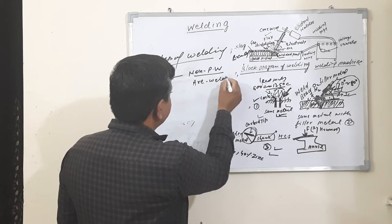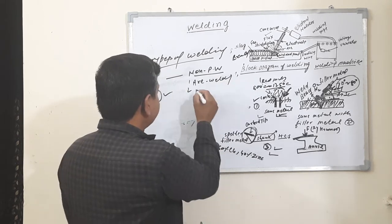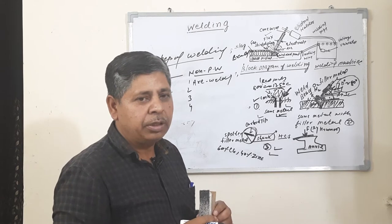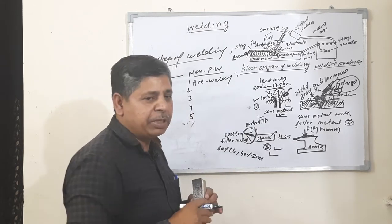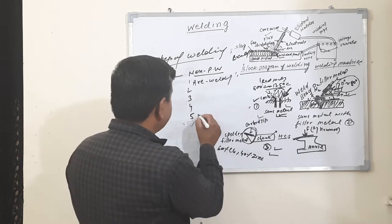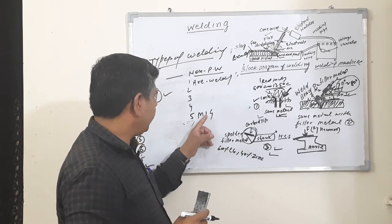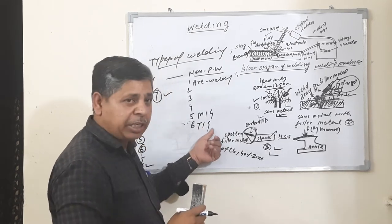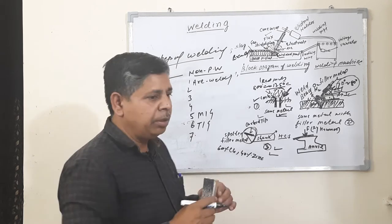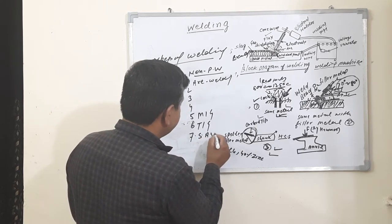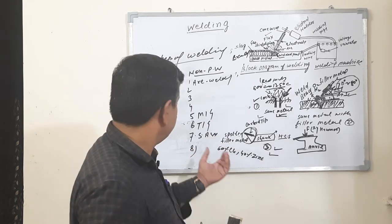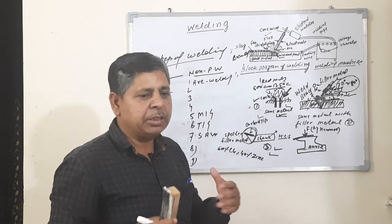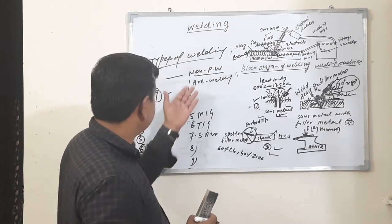Non-pressure welding includes: arc welding, metal arc welding, gas welding, MIG welding — that is metal inert gas welding, TIG welding — tungsten inert gas welding, submerged arc welding (SAW), thermite welding, hydrogen welding, and others. These are the non-pressure welding processes used to perform welding.